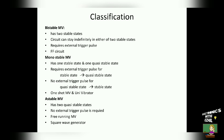The last one is astable multivibrator. Astable means no stable — it has two quasi-stable states. This circuit does not require any external trigger pulse to change its state from one quasi-stable state to another quasi-stable state. Hence it is called free-running multivibrator. This circuit is also called as square wave generator since it generates a square waveform at its output without the help of an external trigger pulse.